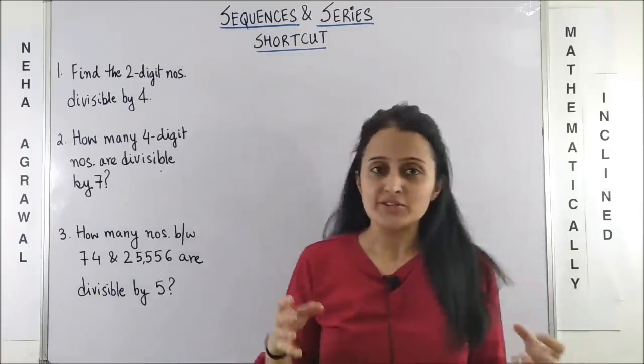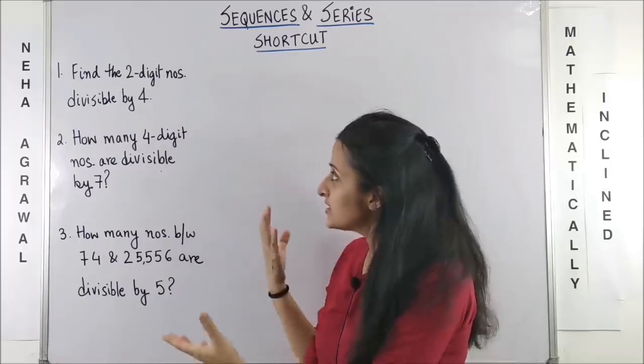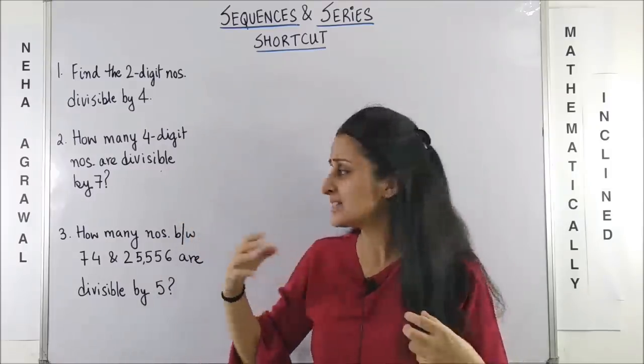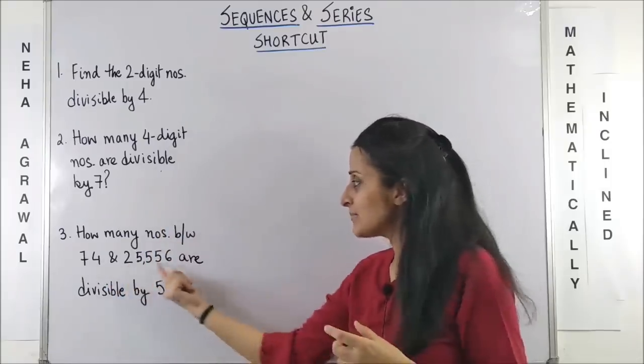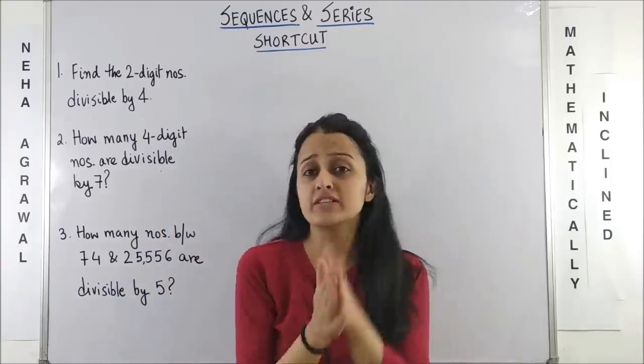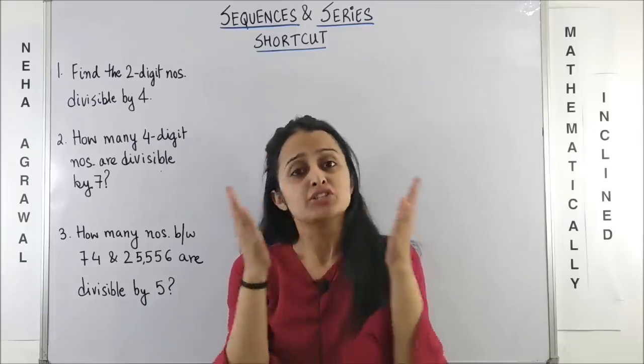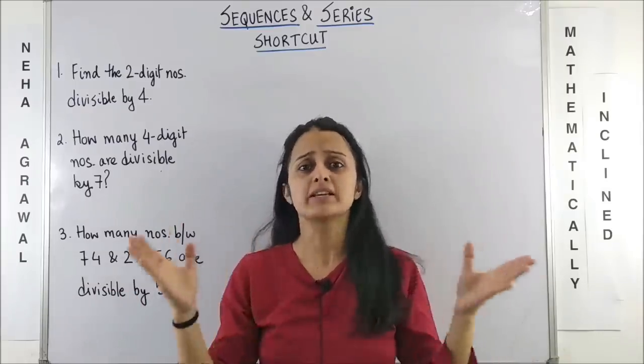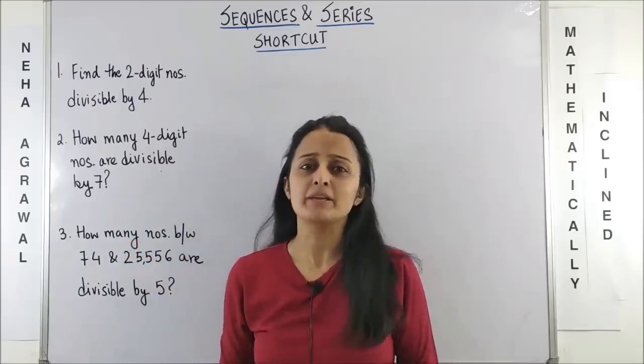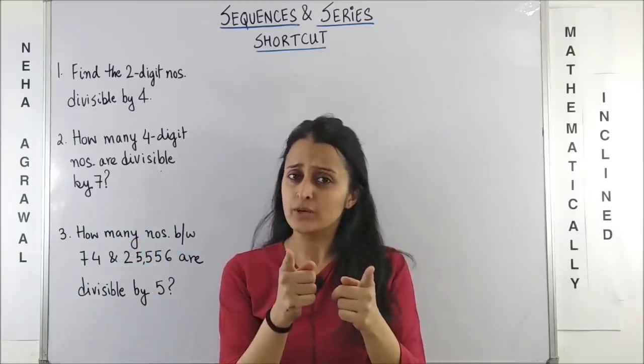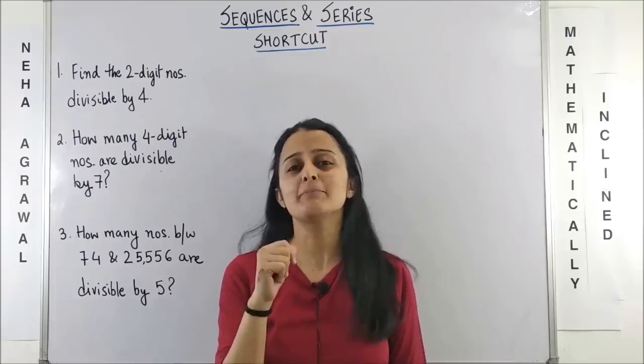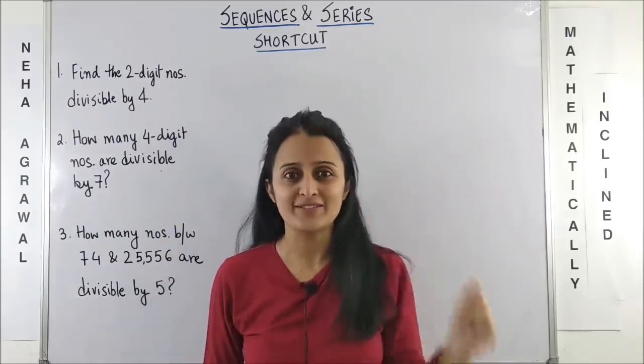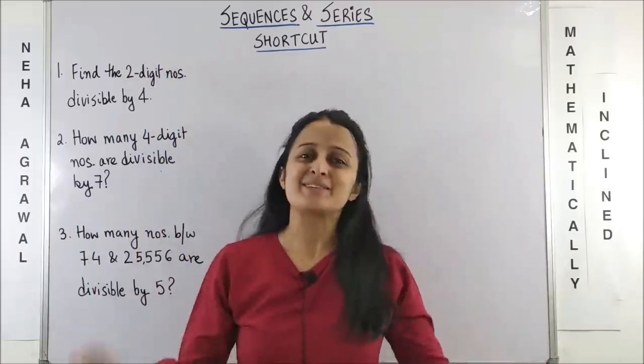So if you come across questions of the type, find the two-digit numbers divisible by four or four-digit numbers divisible by seven or even some specific numbers given to you divisible by a certain number. Yes, absolutely. If you do it with your regular method, this becomes an AP. So make it an AP. Well, you get started with making your AP and I'll apply the shortcut to solve such questions within five seconds. Let the magic begin.